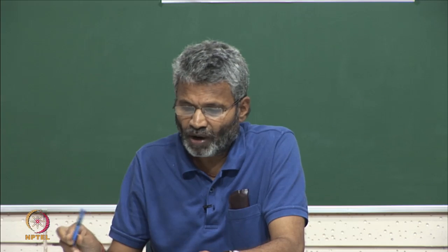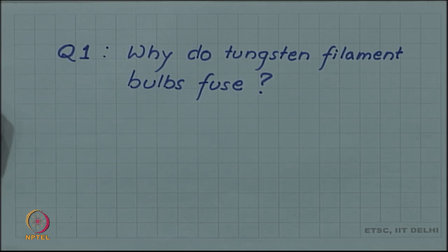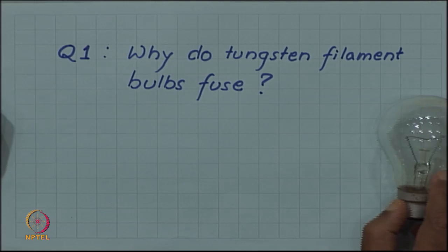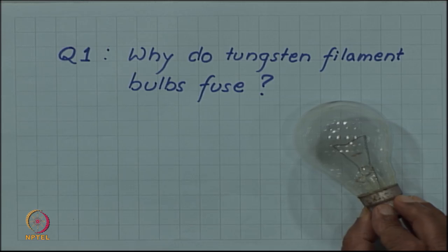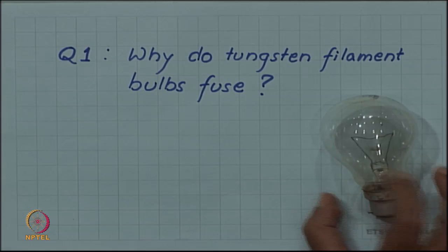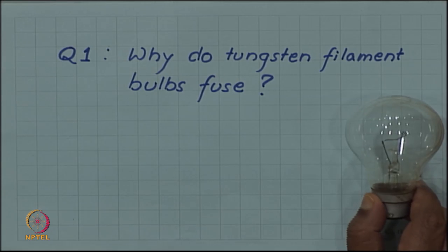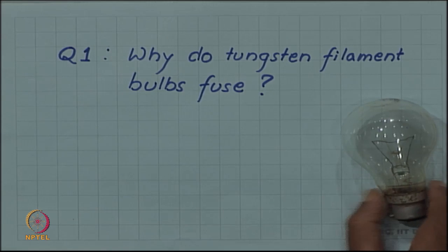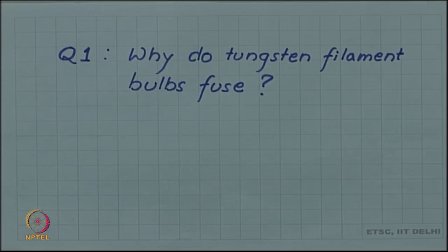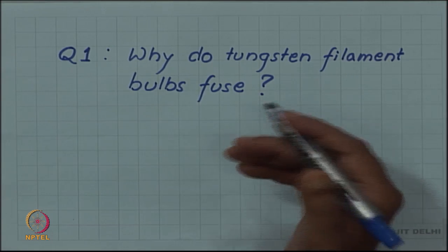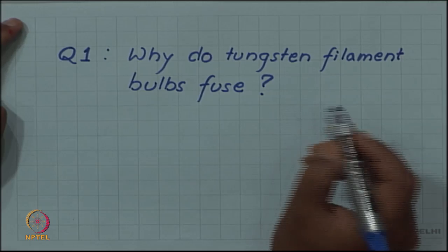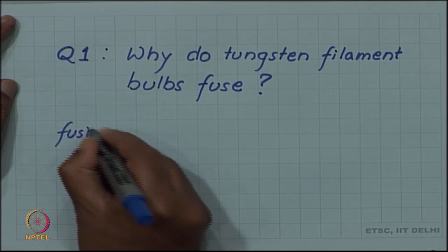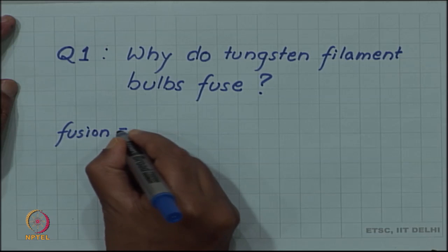The first question is why do tungsten filament bulbs fuse? These are the old fashioned bulbs now going rapidly into obsolescence. You can see that there is a tungsten filament and that filament finally comes to an end of its life. That is called that the bulb has fused. So why do bulbs fuse?